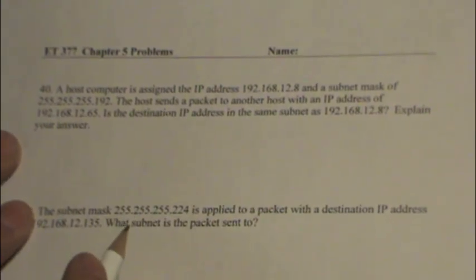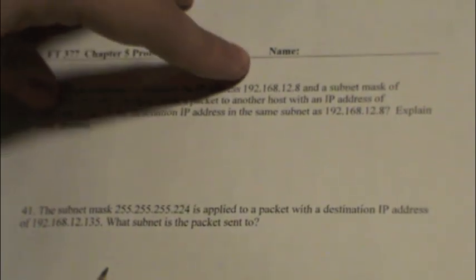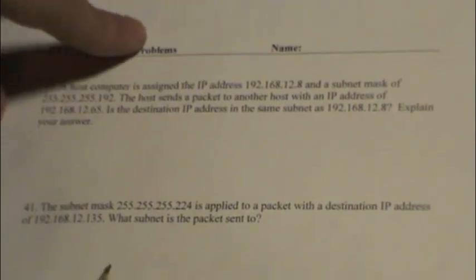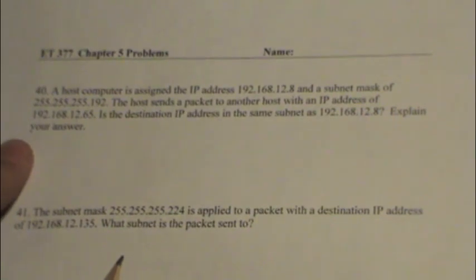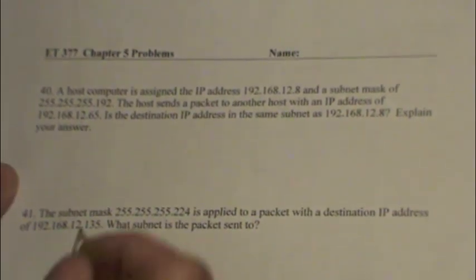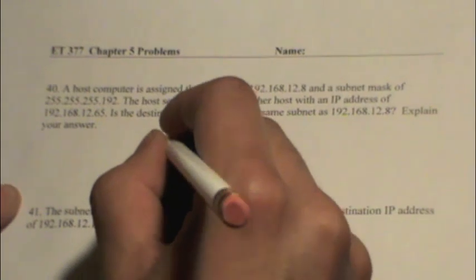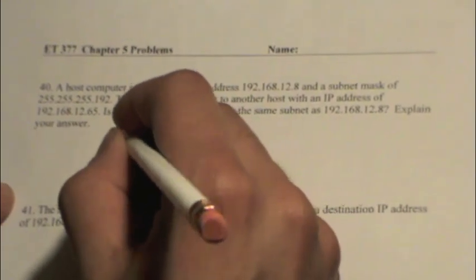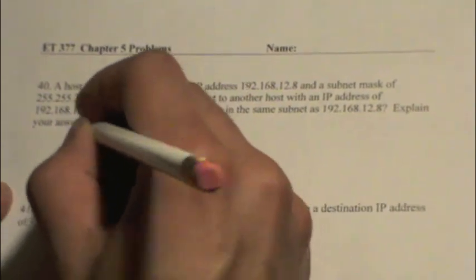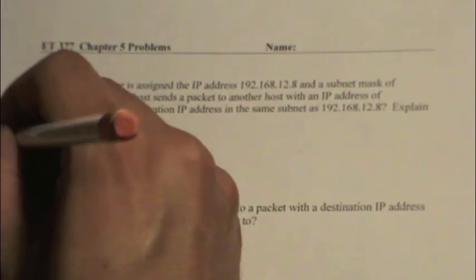This is a pretty common question that will come up with variable length subnet masking in your network. What we're going to do is translate each of the addresses to determine what subnet they're actually in. To do that we'll write out the binary values: 8, 16, 32, 64, 128.